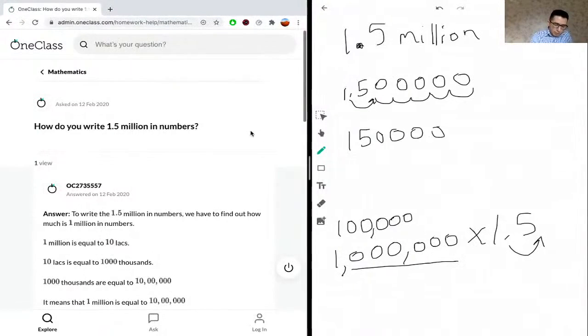Now the decimal point is at the end. You don't necessarily have to write it, but just to tell you where it is. And we're left with 1.5 million but in a numerical format. So we can put commas between every three digits just to make it look a little clearer, and this is our final solution. So this is 1.5 million in a numbers format.